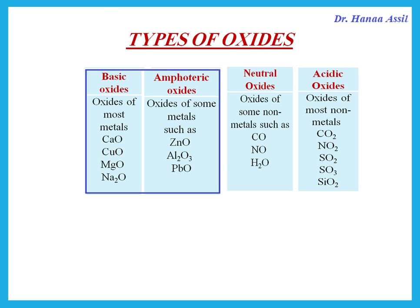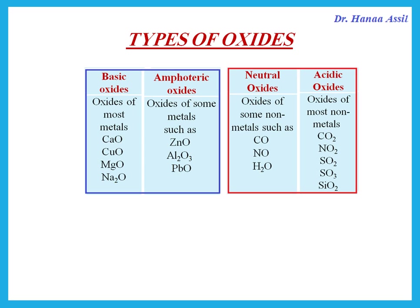So remember that basic oxides and amphoteric oxides are oxides of metals. Most metals will form basic oxides. Zinc, aluminium, and lead will form amphoteric oxides. Oxides of non-metals are mostly acidic, but some of them are neutral — carbon monoxide, nitrogen monoxide, and water.